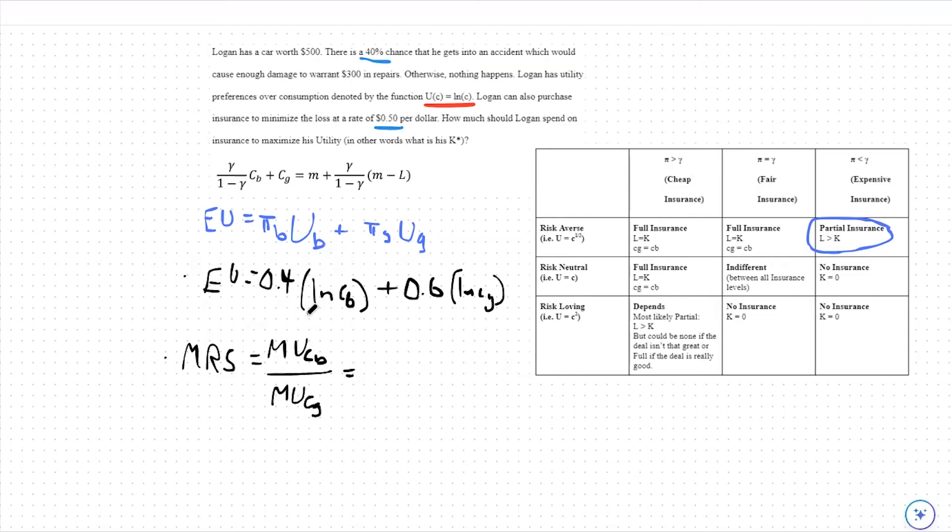The partial derivative of the bad state, or consumption in the bad state, would be 0.4 over CB. And then we're going to put that over 0.6 over CG, or our derivative of our expected utility function with respect to the good state.